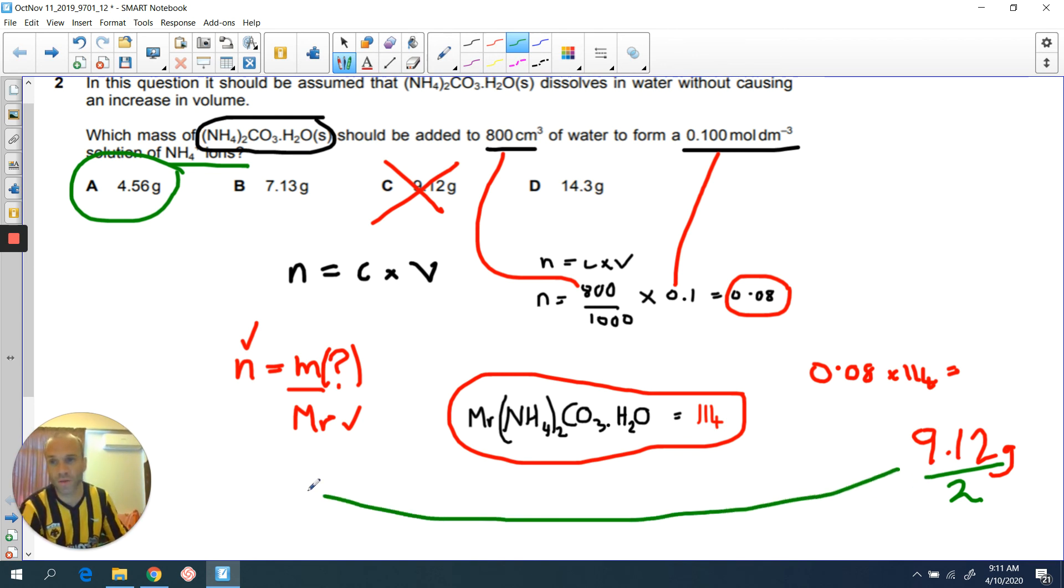So the reason why it's 4.56 and not 9.12 is because you had to realize they were asking only about these ions. Therefore, they don't want that to be doubled. I hope that helps.